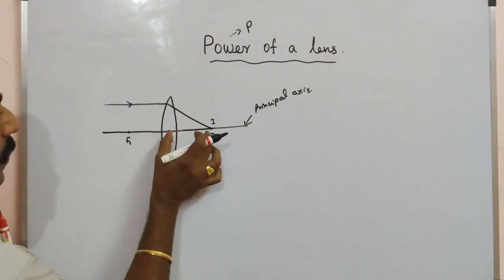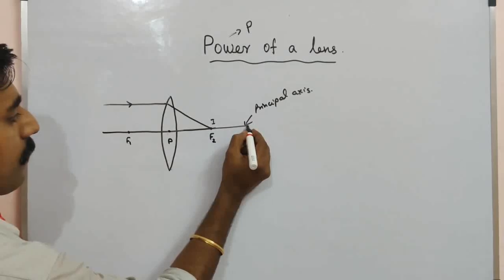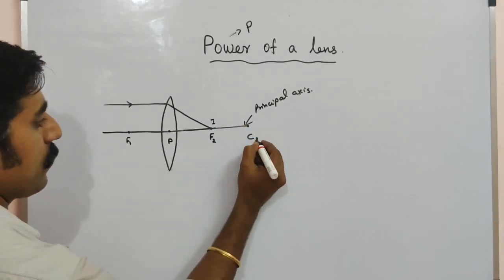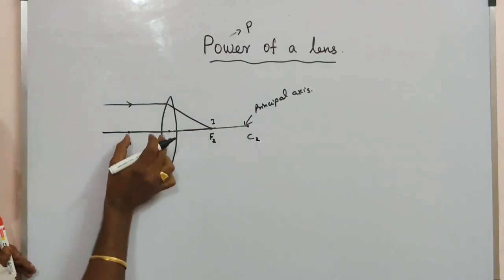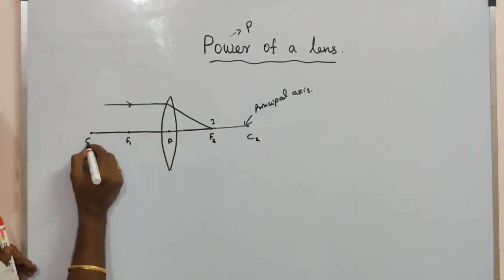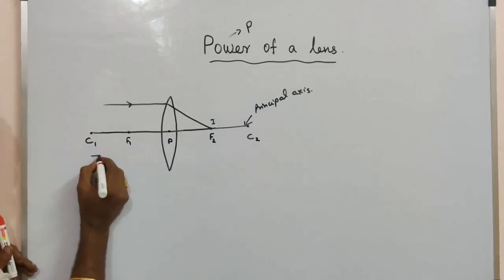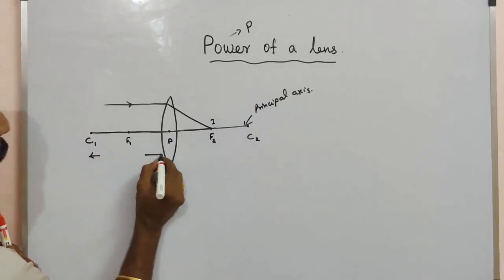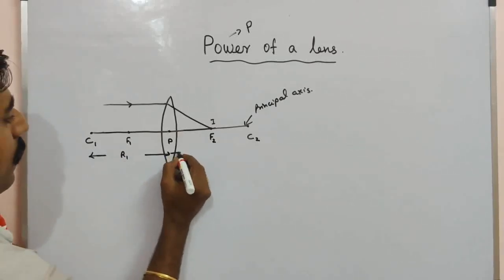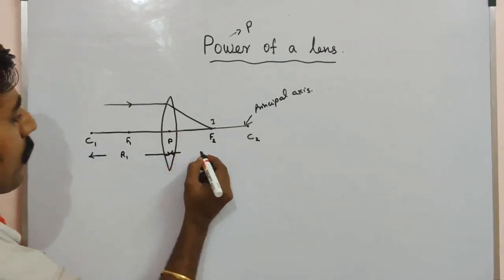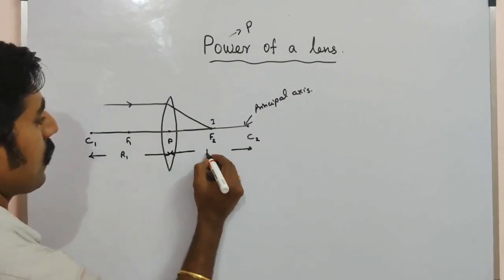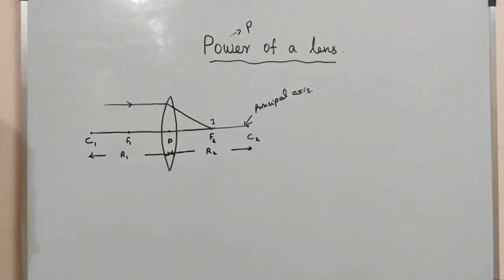The center of curvature C2 and center of curvature C1 are marked. The radius of curvature is R1 on one side and R2 on the other side. These two values can be equal.